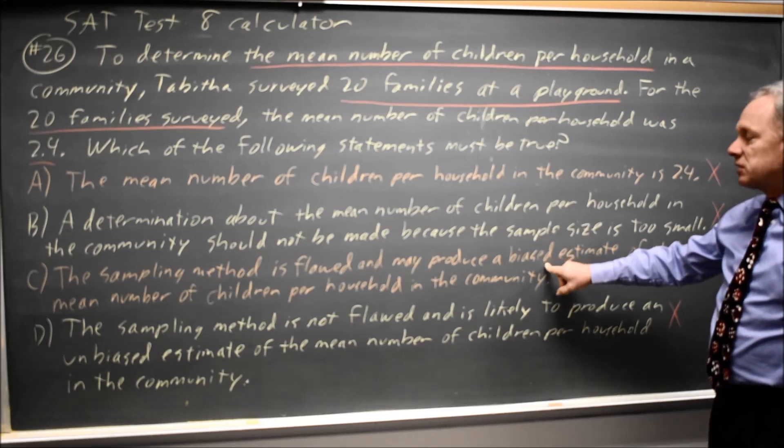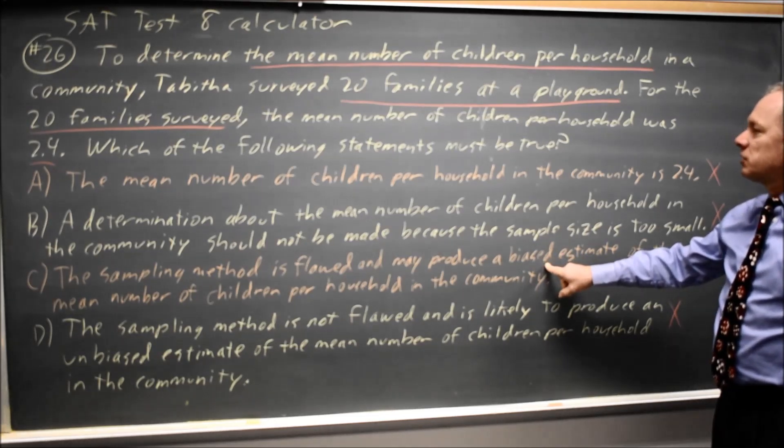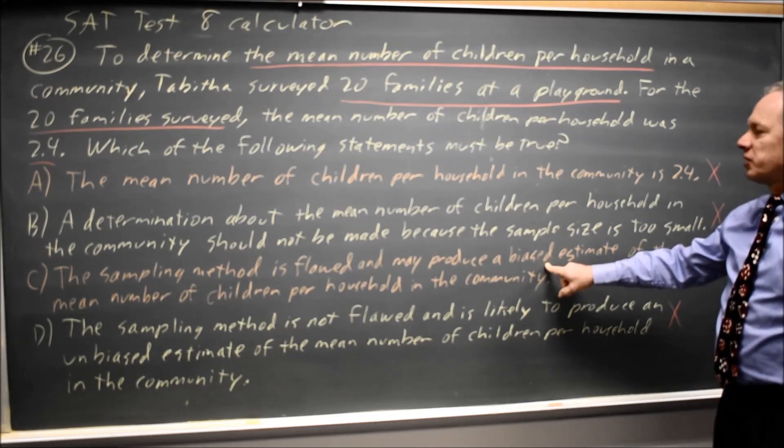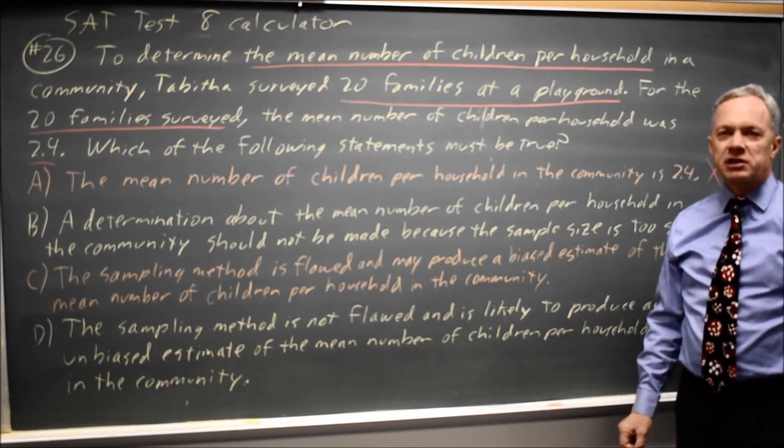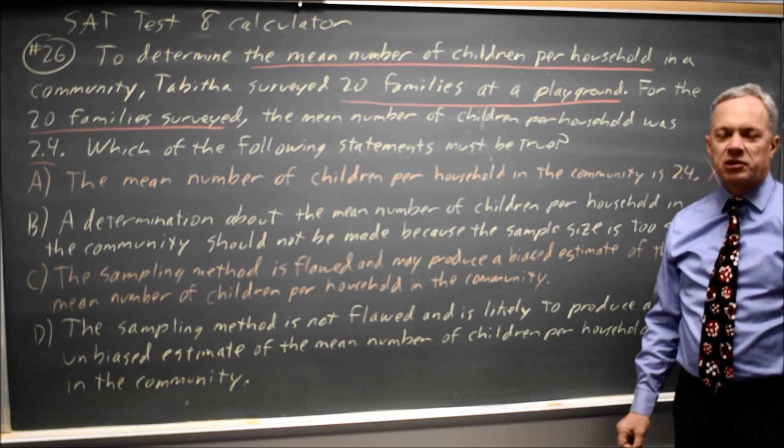So of these choices, choice C is a reasonable interpretation of the survey and the other choices are seriously flawed because the survey sample is not representative of the entire community.